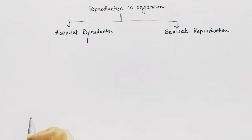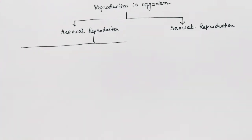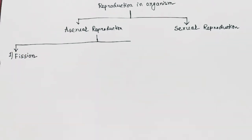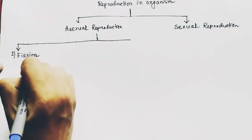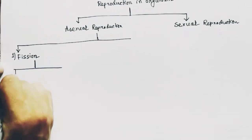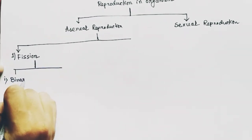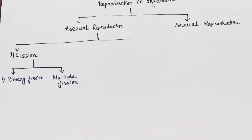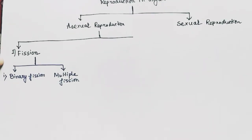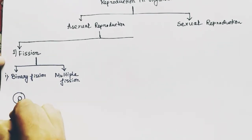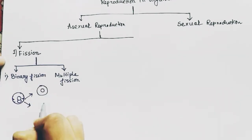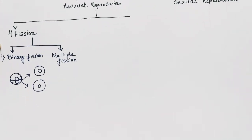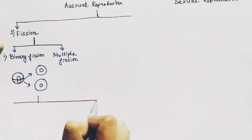Different types of asexual reproduction are found in different organisms. The first type is fission, which means the division of unicellular organisms into two or many individuals. Fission can be of two types: binary fission and multiple fission. In binary fission, when an organism divides asexually, it forms two organisms — that is why it is called binary fission.